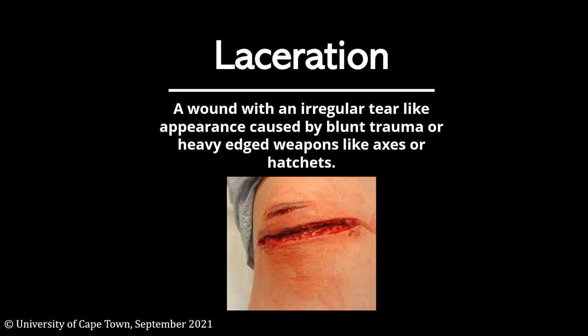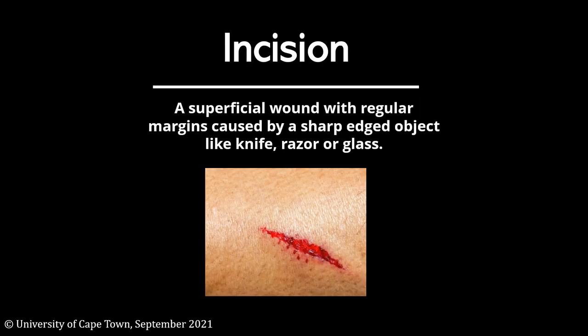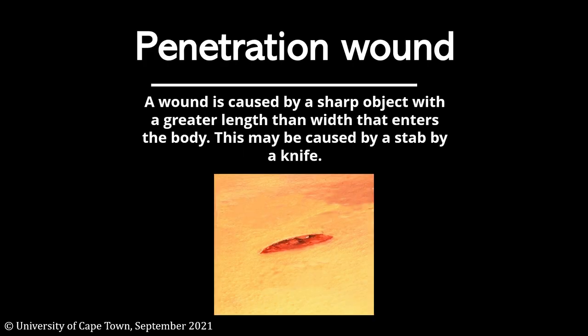A laceration is a deep wound with an irregular tear-like appearance caused by blunt trauma or a heavy edged weapon like an axe or a hatchet. An incision is a superficial wound with regular margins caused by a sharp edged object like a knife, razor, or glass.